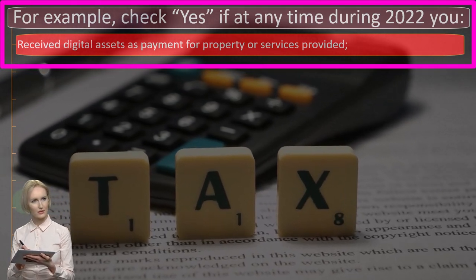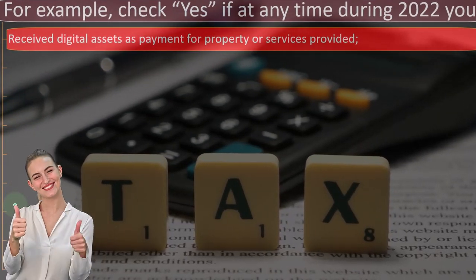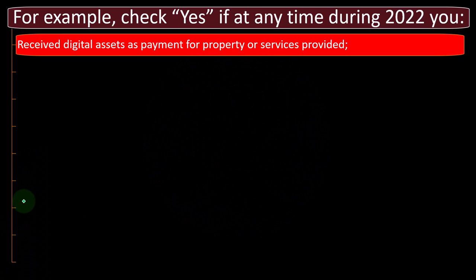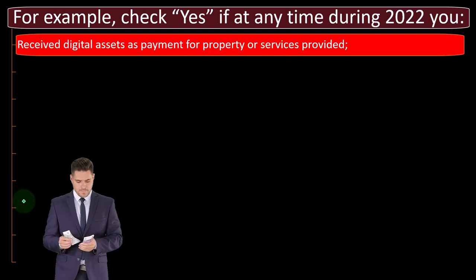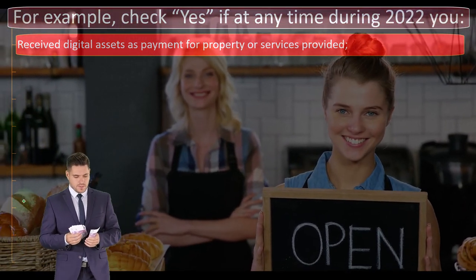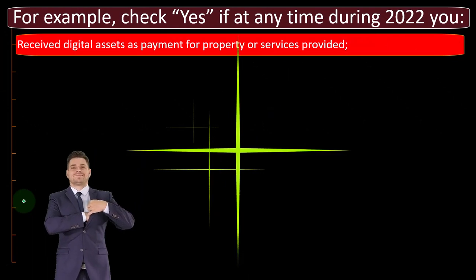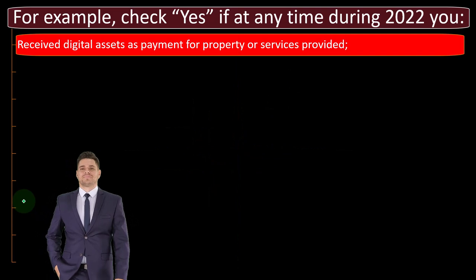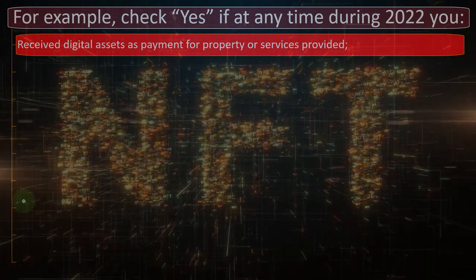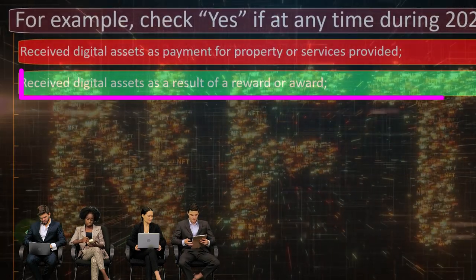Check Yes if at any time during 2022 you received digital assets as payment for property or services provided. This is similar to a bartering situation. If you received something other than cash — like someone paid you in the form of their goods and services — the IRS still wants that recorded as income. If you received a digital asset instead of standard US dollars, it's the same thing: you received payment in something other than US currency and must record it as income for your business.